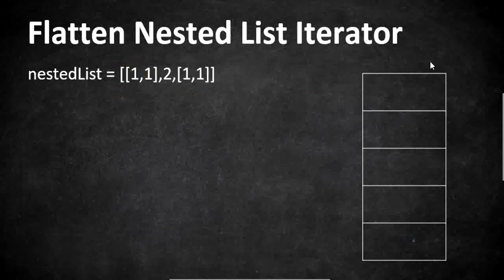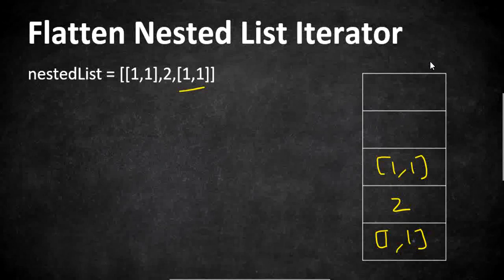From the reverse, if it is a list we put the list directly onto the stack, then comes an integer, and again a list. For the next method, we simply pop the element at the top of the stack and if it is an integer we return it. So every time next is called, we return the next integer at the top of the stack.